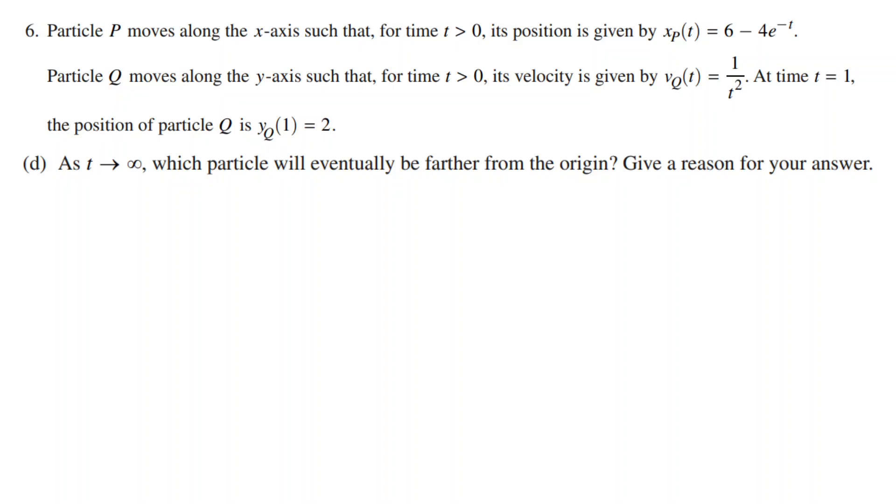We start with a limit as t approaches infinity of xp of t. We can write xp of t out and it becomes 6 minus 4 over e to the power of t. To solve this limit, we know that t becoming infinitely large causes the denominator to be large. This means that the fraction will become really small and we can ignore it. The limit for this would just be 6.